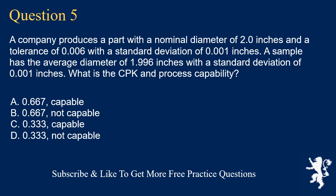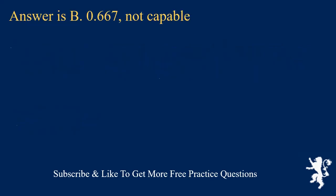Question 5. A company produces a part with a nominal diameter of 2.0 inches and a tolerance of 0.006 with a standard deviation of 0.001 inches. A sample has the average diameter of 1.996 inches with a standard deviation of 0.001 inches. What is the CPK and process capability? A. 0.667, capable. B. 0.667, not capable. C. 0.333, capable. D. 0.333, not capable. Answer is B. 0.667, not capable.